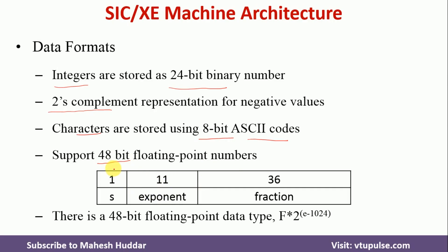The format of floating point number representation is as follows: the most significant bit defines whether the number is negative or positive. If this bit is 0, it is a positive number; if it is 1, it is a negative number. The next 11 bits represent the exponent, and the remaining 36 bits represent the fraction. To find the actual floating point number, we use the equation: f (fraction part) multiplied by 2 raised to (exponent minus 1024).